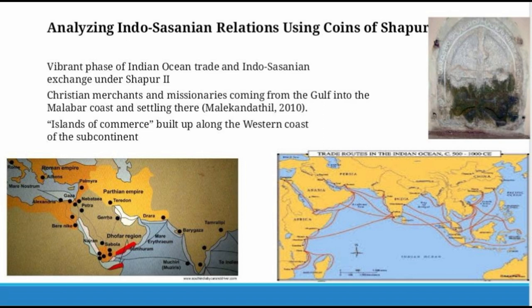Along the coast of Malabar and in Gujarat and other parts of the western and southwestern coast, these merchants and missionaries established settlements, creating the so-called islands of commerce. This process began from around the 2nd–3rd century CE and continued for almost 10 to 13 centuries into the medieval period. A large number of Pahlavi-speaking Christian merchants from Persia came into marts in Kerala, where traders' guilds existed in Kerala, Konkan, Mahabalipuram, and even Sri Lanka, patronized by local kings.